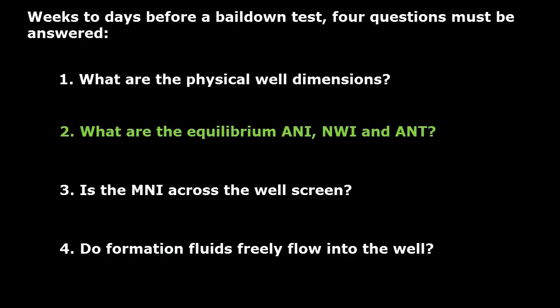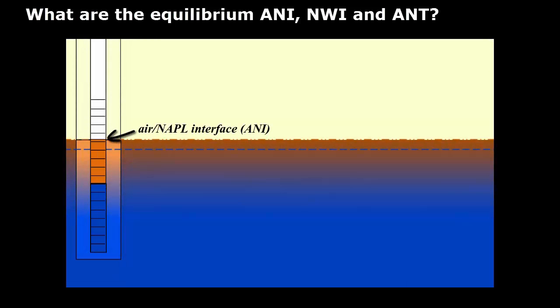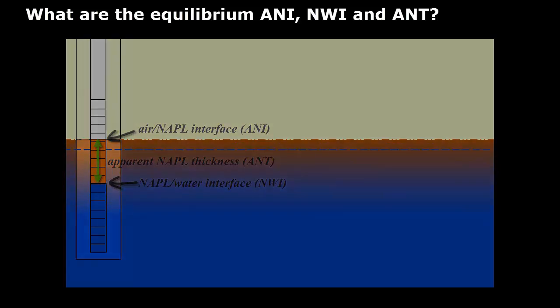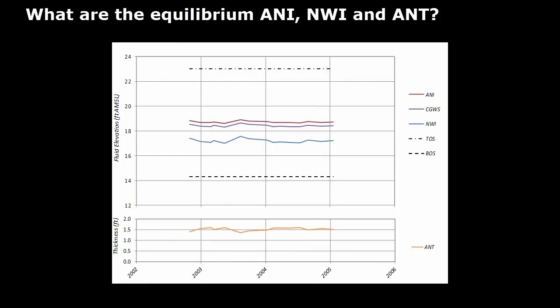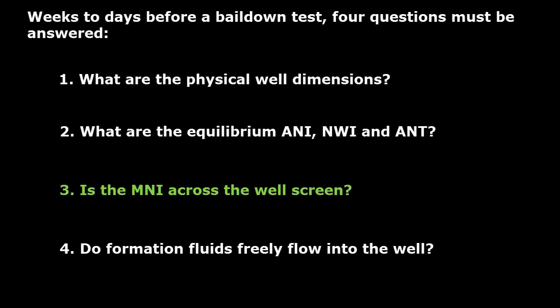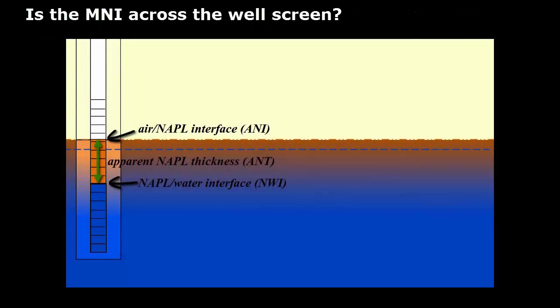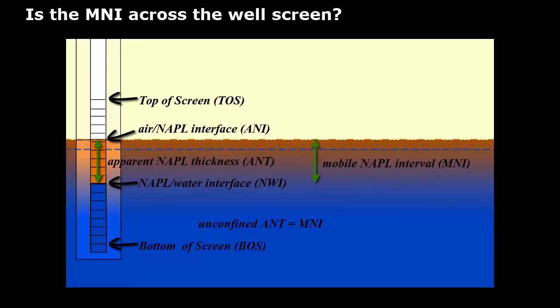What are the equilibrium air-NAPL and NAPL-water interface elevations and apparent NAPL thickness? The air-NAPL interface (ANI) and NAPL-water interface (NWI) are gauged repeatedly over time, and the difference between them is the apparent NAPL thickness (ANT). This gauging information is plotted on a hydrograph to provide equilibrium interface elevations and apparent NAPL thickness. The gauged ANI and NWI for unconfined LNAPL at equilibrium represent the boundaries of the mobile NAPL interval (MNI), so long as both interfaces are contained within the screened interval. If the equilibrium apparent NAPL thickness is in the screened interval, then the mobile NAPL interval must also be within the screened interval.